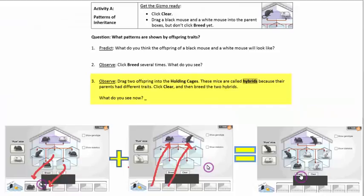Now for number three, we took one of those offspring, put it in our holding cage down here, cleared the boxes, and then put those two offspring up here. We put them up here to breed them, and when we bred them this was our result. Write that result down on number three.